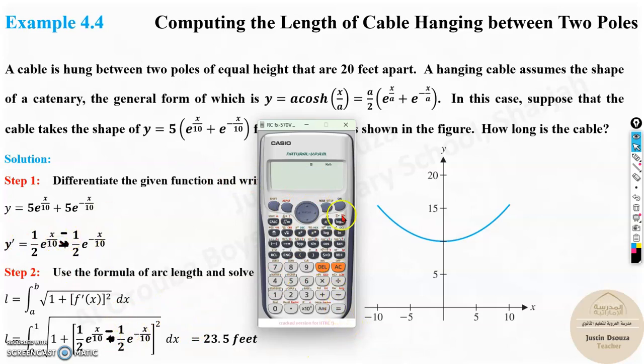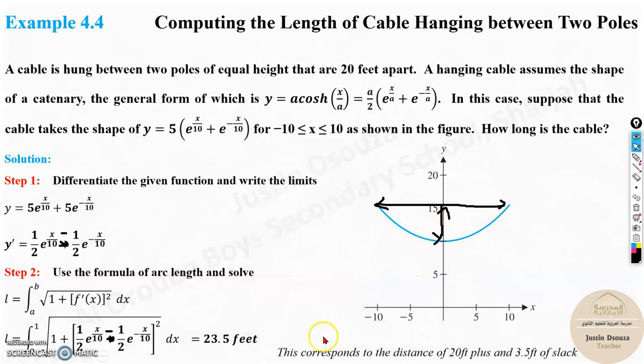Now analyze the answer: 20 feet apart, but the length is 23.5. It's correct because it should be more than 20, and about 3.5 feet of sag. This corresponds to the distance of 20 feet which is apart, and 3.5 feet of slack.